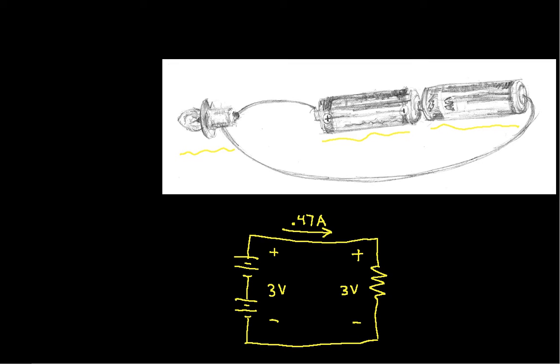So I have the two batteries and I have the light bulb modeled as a resistor. We'll use this circuit as our first example of how to do power computations and then we'll do a couple others as well.